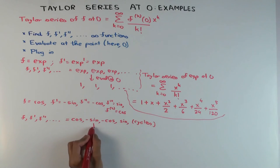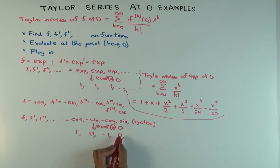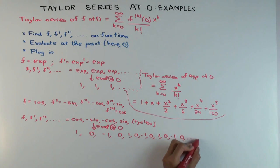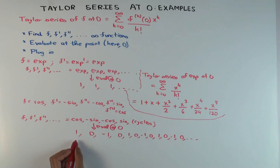Now you want to evaluate at zero. Why? Because then you would plug that in here. So evaluate at zero. What do you get? One. Cosine zero is one. Negative sine zero is zero. Negative cosine zero is negative one. Sine zero is zero. And now it cycles. I'll just write the first few terms.